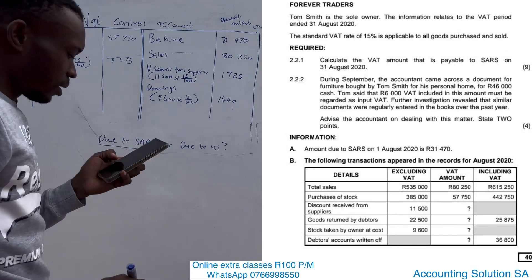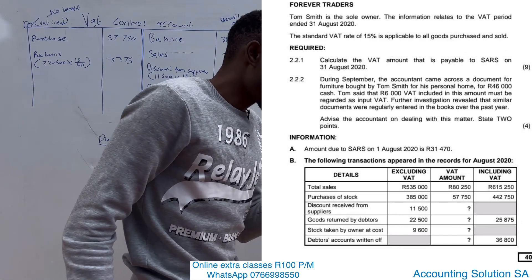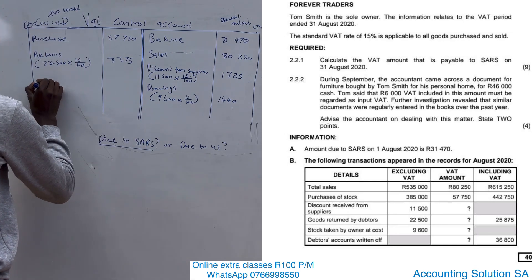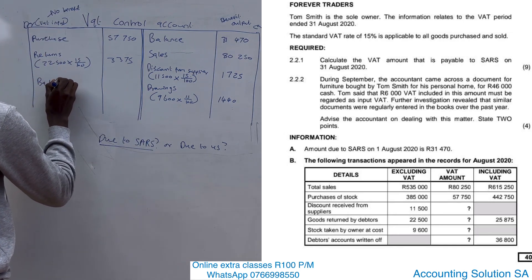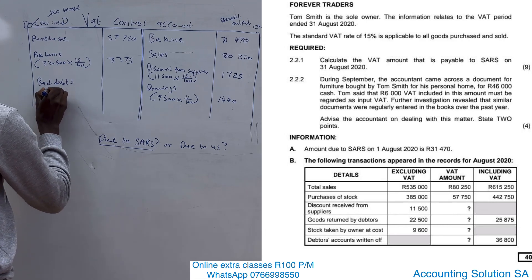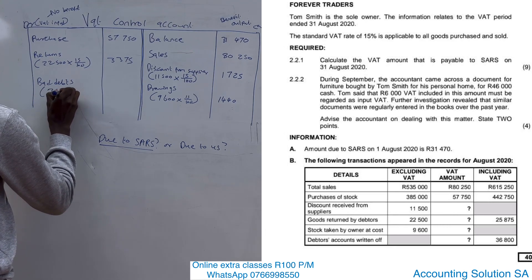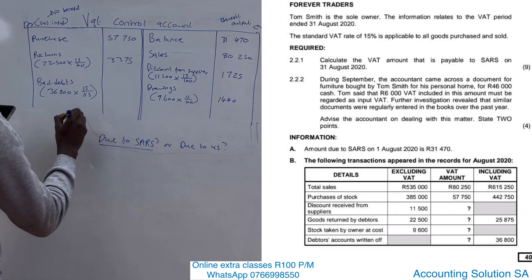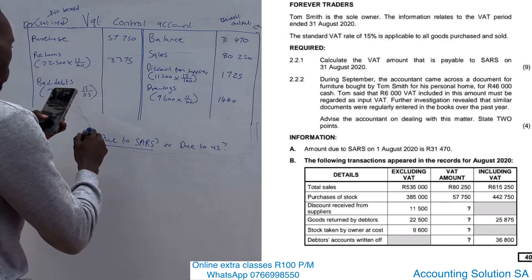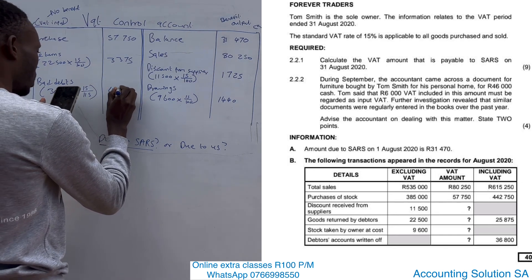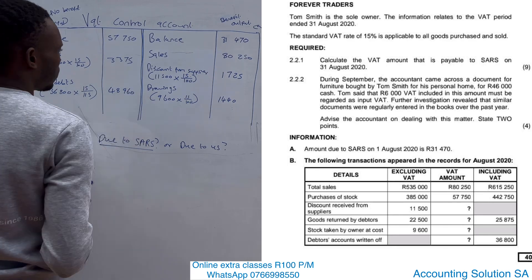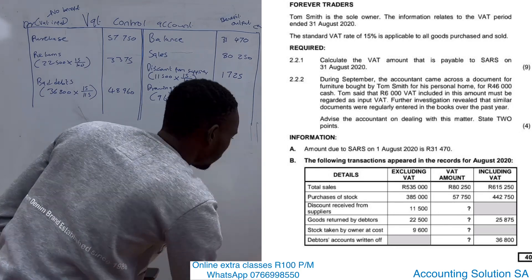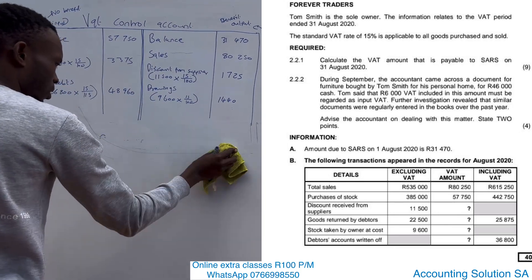The last transaction: a bad debt written off. We didn't benefit — it's an expense. We have an amount of 36,800 which is inclusive of VAT, so we divide by 115 and multiply by 15. The VAT amount is 4,800 — wait, this gives us 4,800. Actually working through the division, the amount comes to 4,800, recorded on the debit side as input.